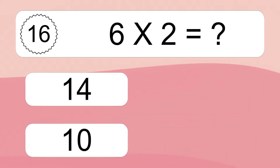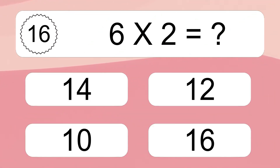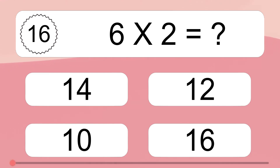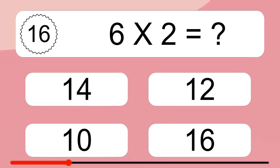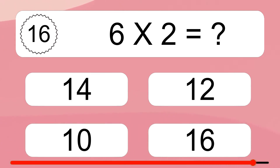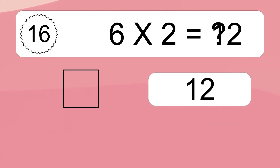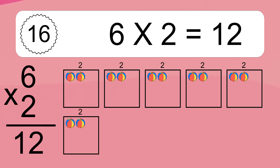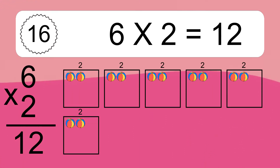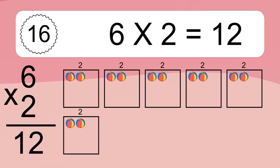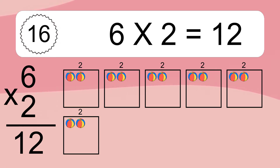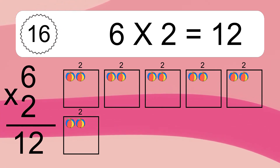6 times 2 equals what? 6 times 2 equals 12. We have 6 boxes, and each box has 2 colorful balls inside. If you count all the balls in all the boxes together, you will have 6 times 2 balls. This equals 12 balls.